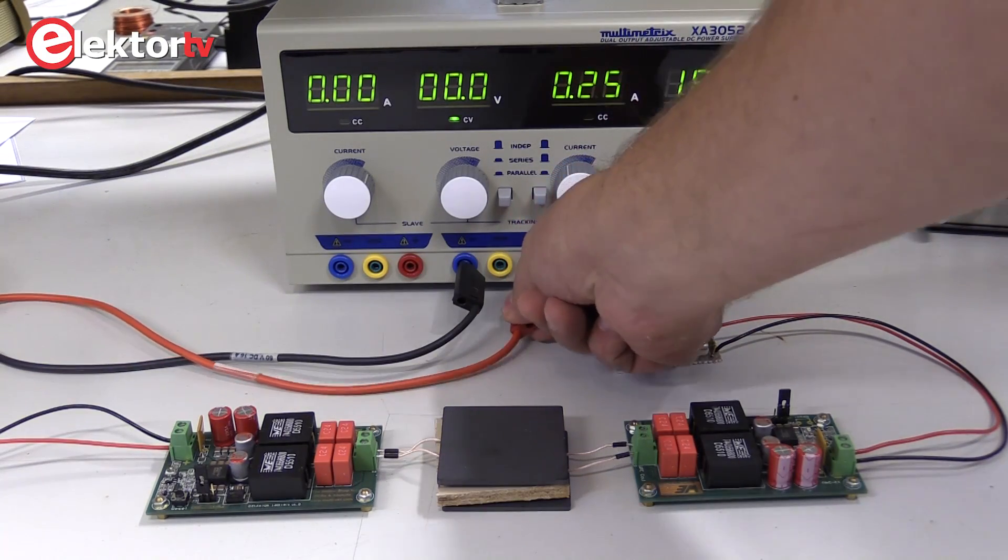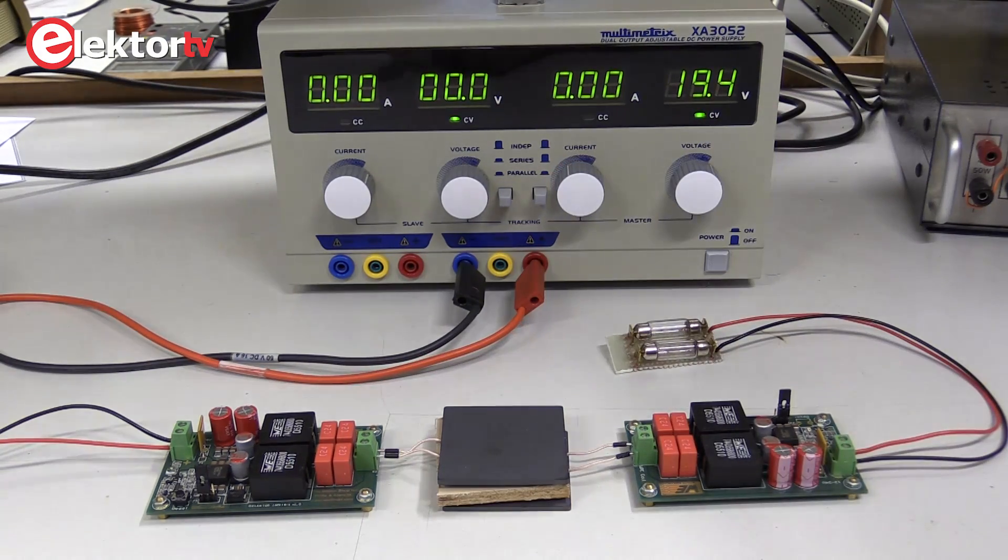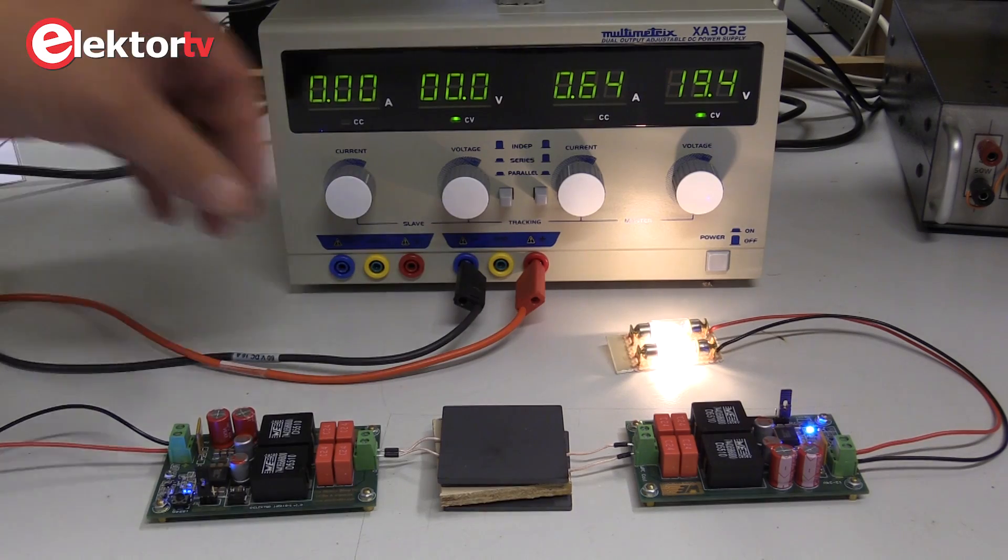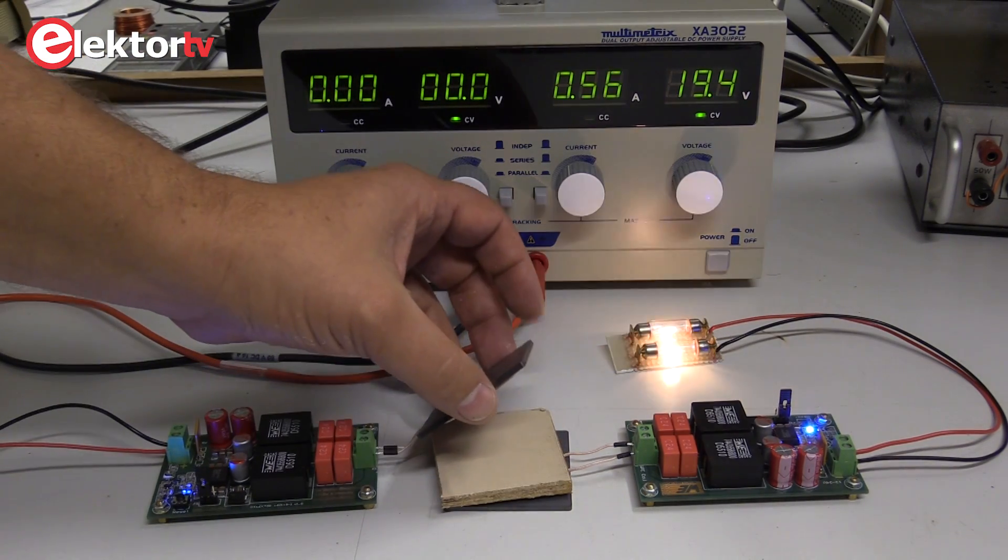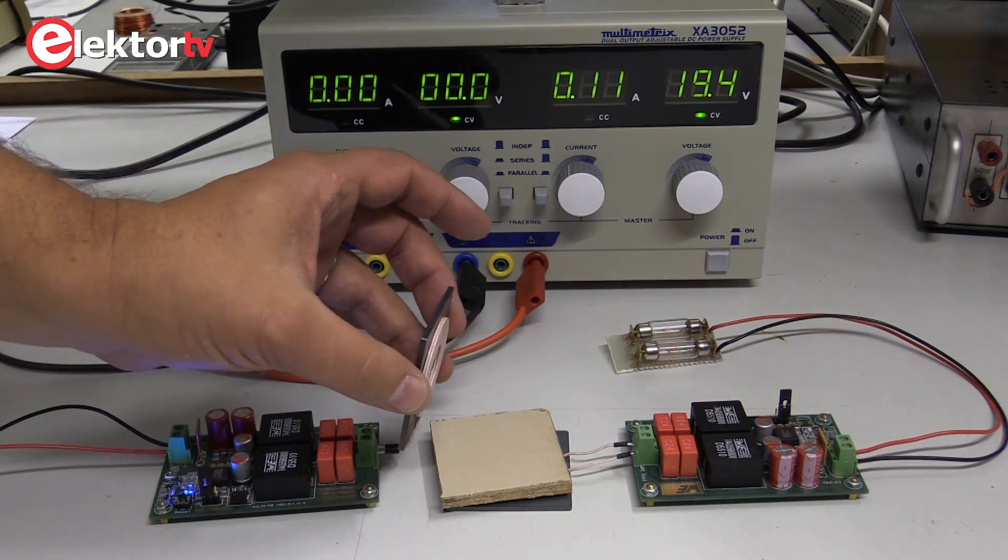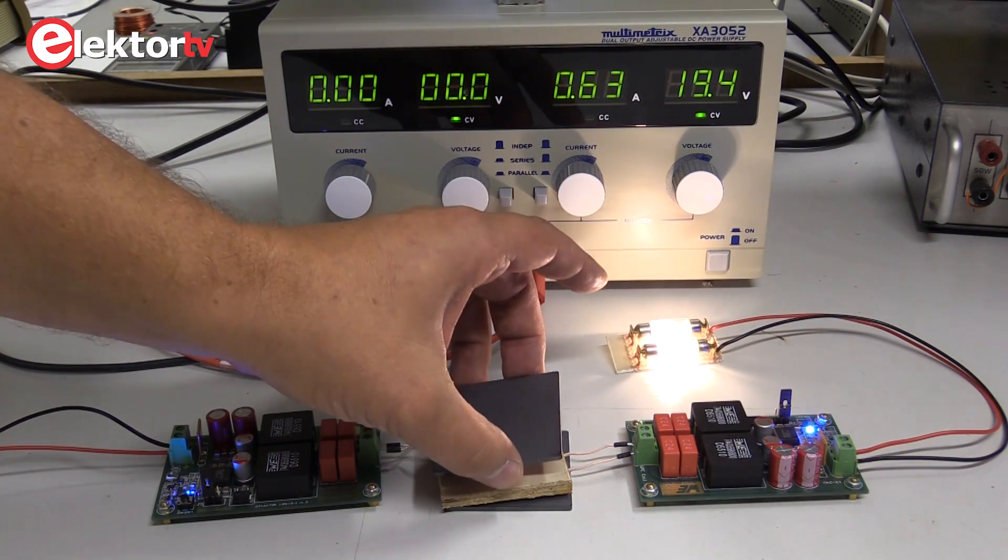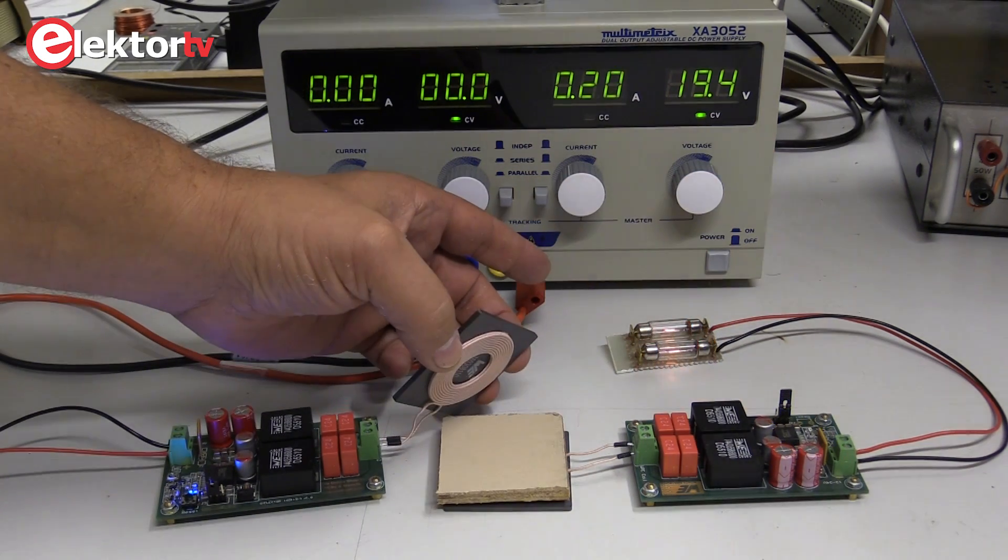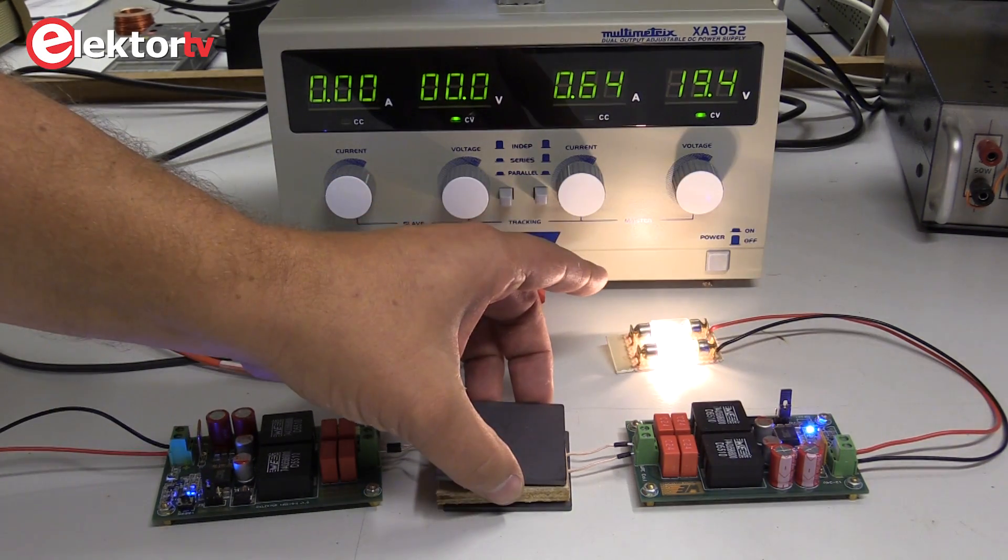The light bulbs are well suited to show the amount of energy received while varying the distance between the two coils. At a distance of three to three and a half centimeters the light bulb begins to dim. At a distance of 6.5 millimeters, the thickness of the piece of wood between the coils, the efficiency is 88%.